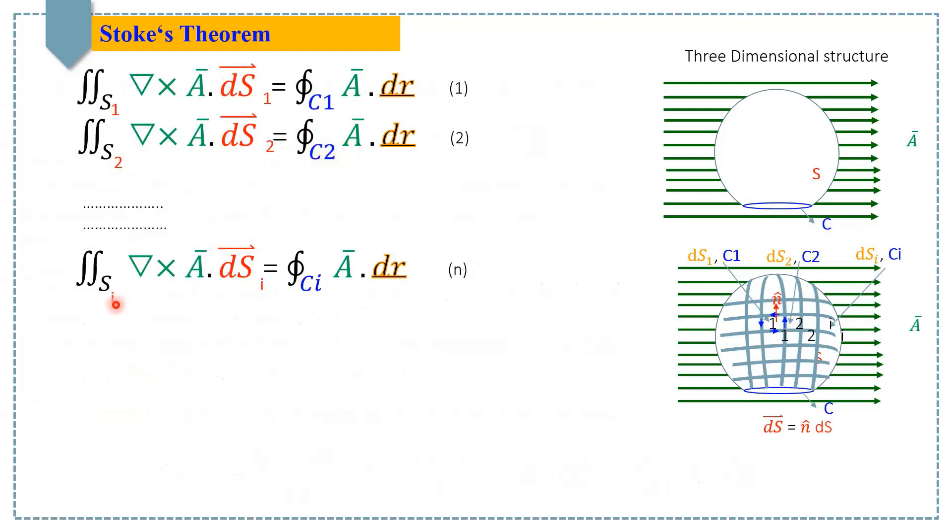And for the ith element, that is surface integral Si del cross A dot dSi is equal to line integral Ci A dot dr. Now, by summing up all equations, finally we get surface integral del cross A dot dS is equal to line integral A dot dr.